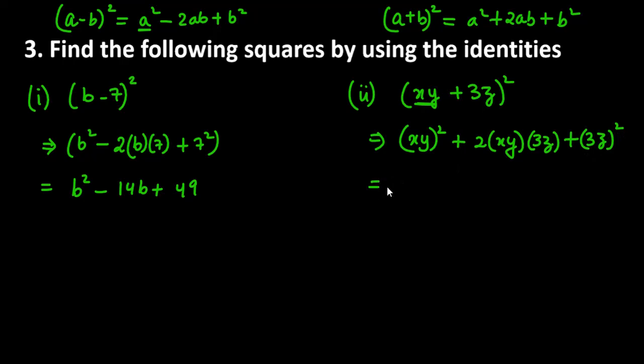What do you have to do first term? x will do square and y will do square. Next, 2 into 3 is 6. x is 1 bar, y is 1 bar, z is 1 bar. Last term, it is 3 square, that means 9z square. So this is the answer for the second part.